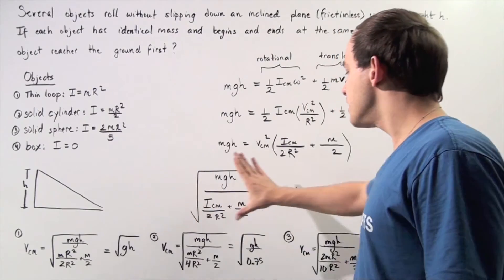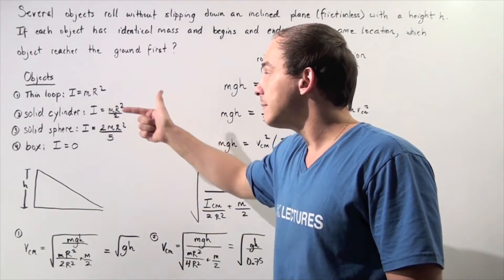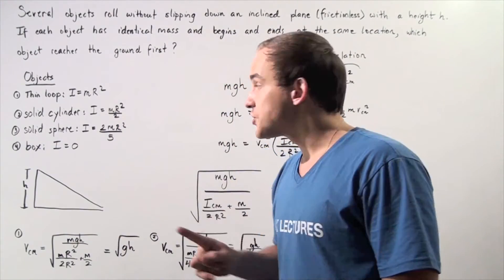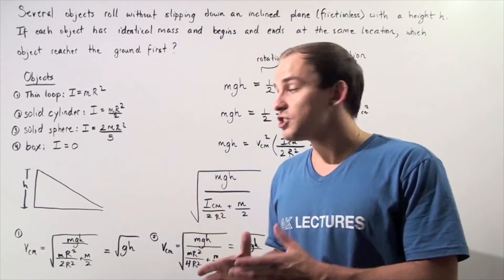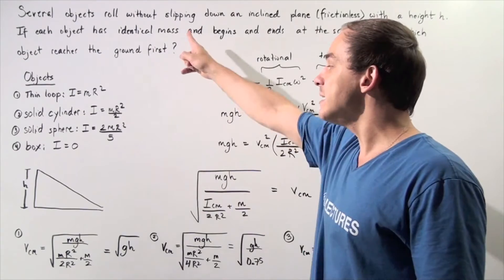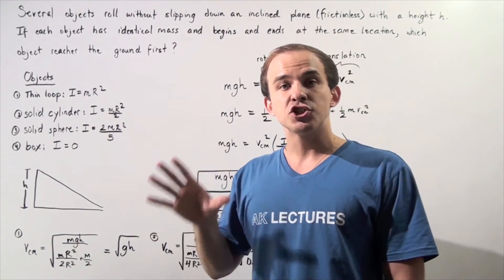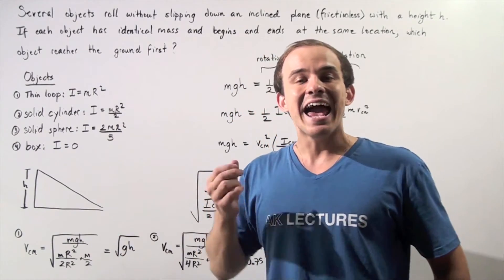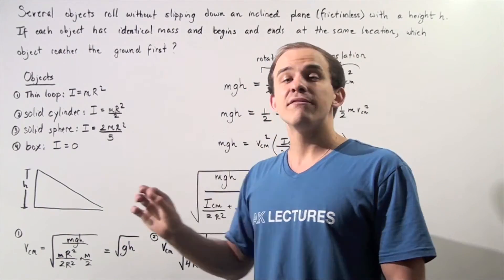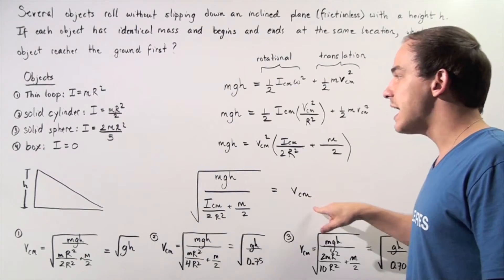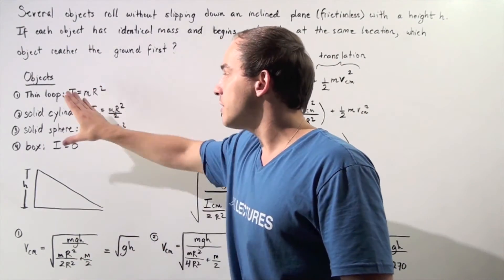Now we use this equation to calculate the final velocity of each object at the bottom. Notice the box has no moment of inertia, because when the box is sliding without slipping, it is not rotating. So all that gravitational potential energy goes into kinetic energy of its translational motion. Therefore, the box will have the highest value for VCM and will end up at the bottom first before any of the other objects.